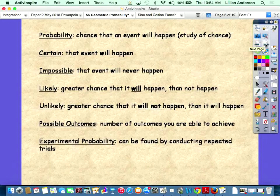A few definitions: probability is the chance an event will happen. Certain means an event will happen. Impossible means it will never happen. Likely means a greater chance that it will happen than not happen. Unlikely means a greater chance that it will not happen. Experimental probability can be found by conducting repeated trials. If you flip a coin 100 times and want to figure out the probability of getting 40 heads out of those 100 tries, that would be experimental probability.